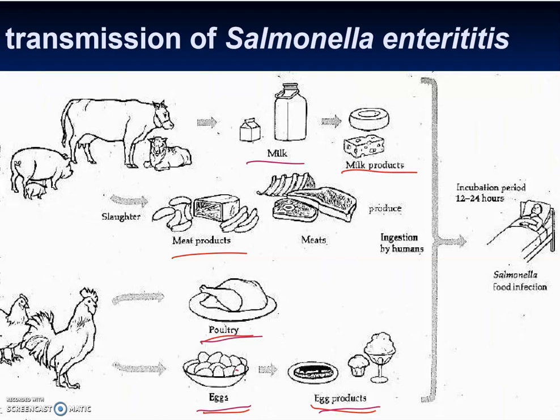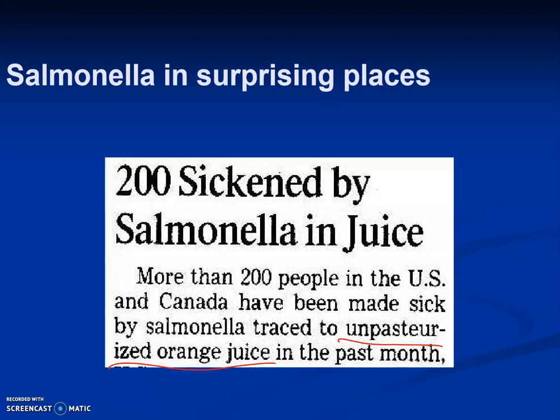The good thing about Salmonella is that it's very heat sensitive — boiling your eggs eliminates it. However, Salmonella is not easily destroyed by stomach acidity, making it a tough pathogen. The incubation period is 12 to 24 hours. Salmonella can also appear in unpasteurized orange juice, since oranges can carry it on the surface and squeezing transfers it to the juice.